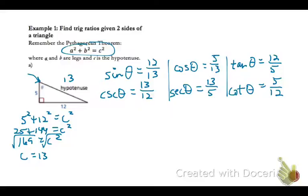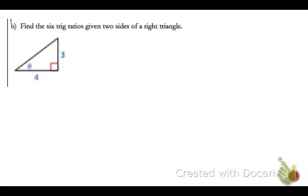These ratios — sine, cosine, tangent, and the lesser three — are used in triangle problems to solve for missing lengths and angles. They're also used in real life because you can use them to find what we call indirect measurements: things you can't physically measure, like tall buildings or lengths across rivers. Let's continue with the next example and find the six trig ratios — sine, cosine, tangent, cosecant, secant, and cotangent — given two sides of the triangle.